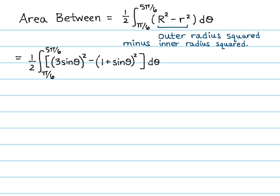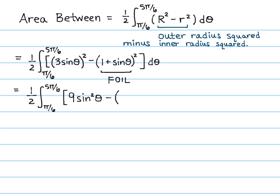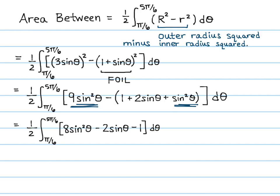Before taking the antiderivative, we simplify algebraically. Squaring both terms gives one half times the integral from pi over 6 to 5 pi over 6 of 9 sine squared theta minus, and foiling out 1 plus sine theta squared gives 1 plus 2 sine theta plus sine squared theta, all times d theta. Combining like terms — 9 sine squared theta minus sine squared theta — the integral becomes one half times the integral of 8 sine squared theta minus 2 sine theta minus 1 d theta.